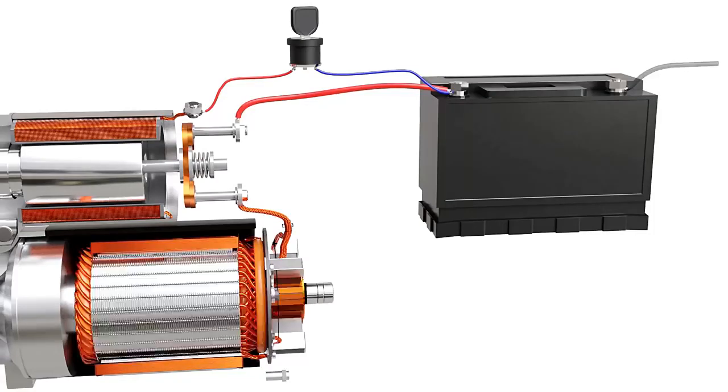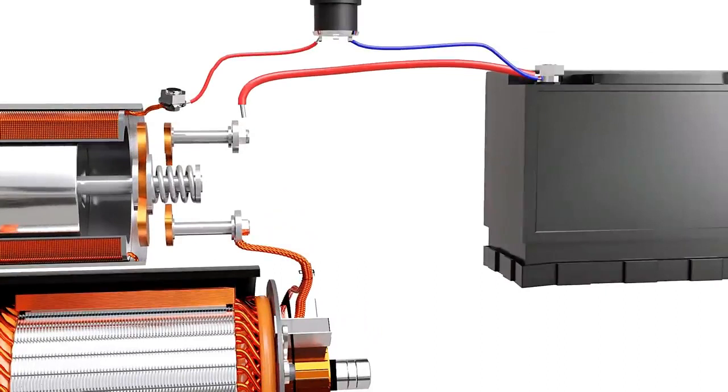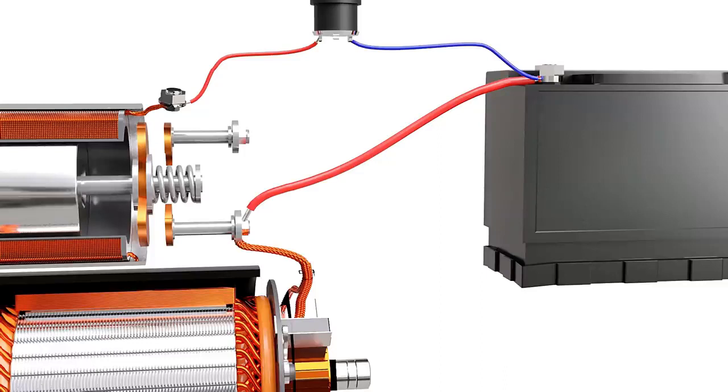When the solenoid is de-energized, the core returns back and disconnects the motor from the battery. We may wonder why the solenoid and contactor are used instead of directly connecting the battery to the motor and reducing the complexity.